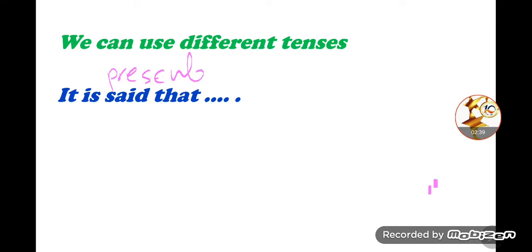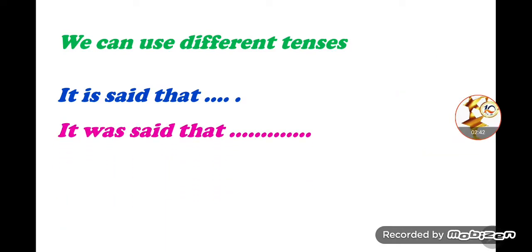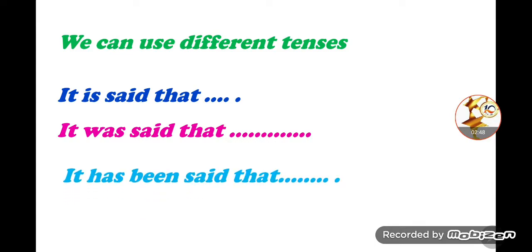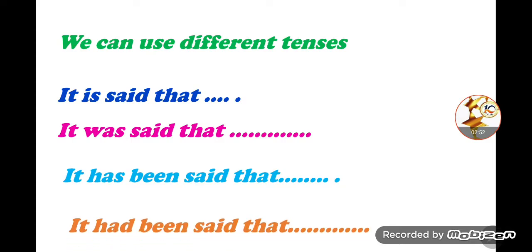We can also use another tense — for example, 'it was said that' when the sentence is past simple, 'it has been said that' for present perfect, 'it had been said that' for past perfect. There are also past continuous and present continuous forms, and so on.